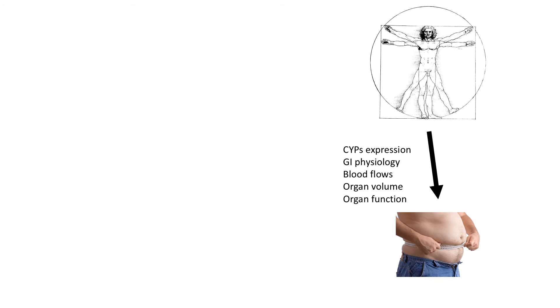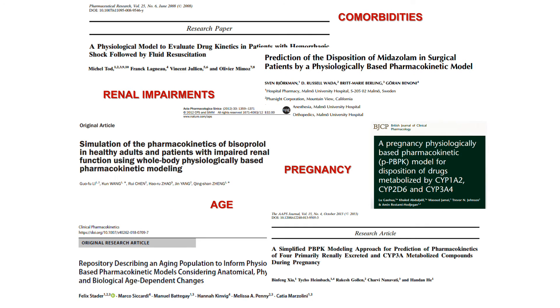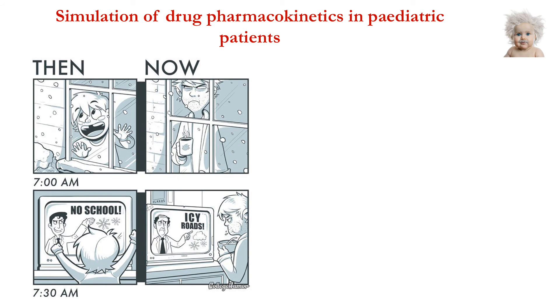We are not treating average individuals — every patient is unique. In some cases, patients can be classified into specific subpopulations: obese patients, elderly patients, neonatal patients, and so on. We can capture these subpopulation characteristics through mathematical equations embedded in the models, providing a stratified approach for predictions. There are multiple publications in which patients with renal impairment, elderly, pregnant women, and neonatal patients have been described to provide predictions of PK.